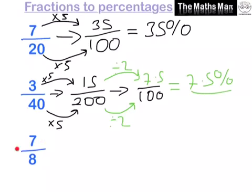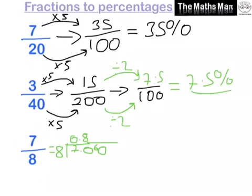For fractions like 7 over 8, we can't change the 8 to 100, so we have to do division. This is the same as 7 divided by 8. 8 doesn't go into 7, so we put a 0 and a decimal point. Does 8 go into 70? Yes — 8 times 8 is 64, remainder 6. Does 8 go into 60? 7 times 8 is 56, remainder 4.